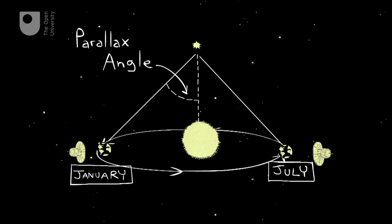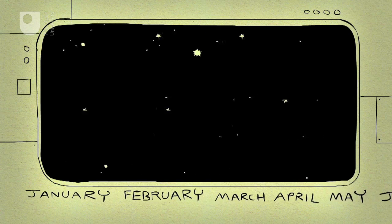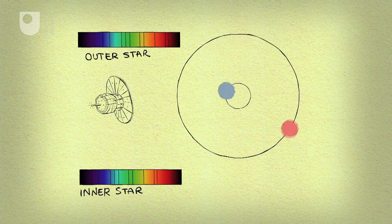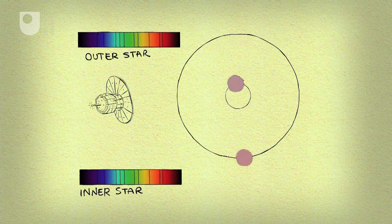This is known as parallax, and as well as measuring how old and bright they are, by measuring their Doppler shifts, it can tell us whether those stars are moving towards us or away from us.